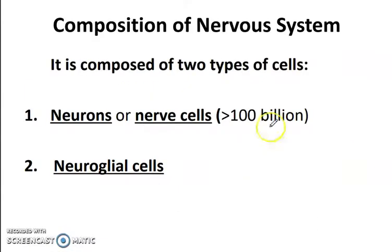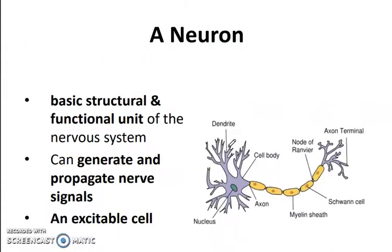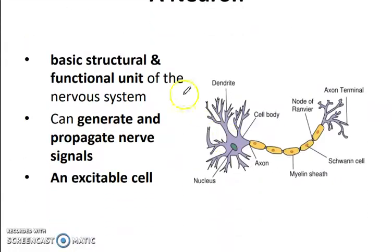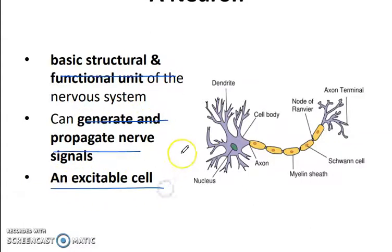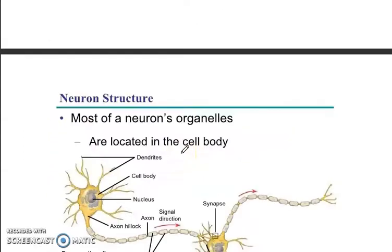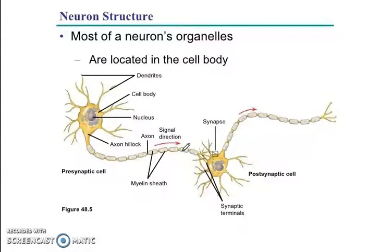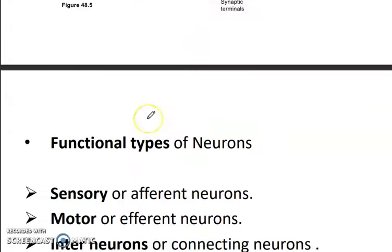The nervous system is composed of two types of cells: neurons and neuroglial cells. A neuron is the basic structural and functional unit. It can generate and propagate nerve signals and is an excitable cell. Most of the neuron's organelles are located in the cell body.